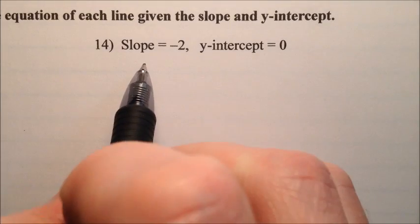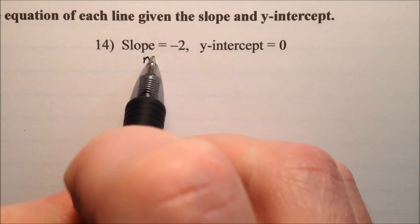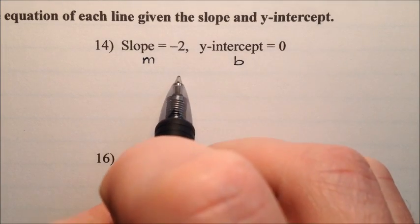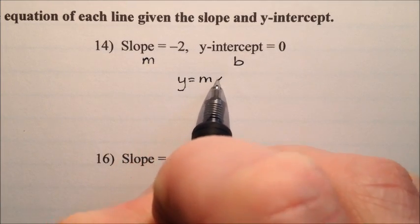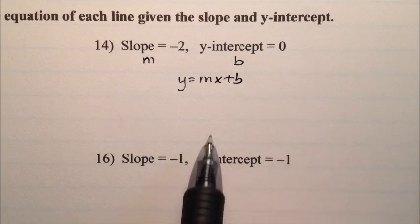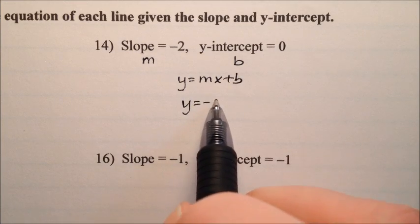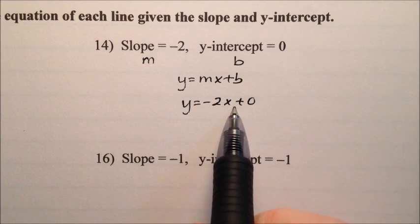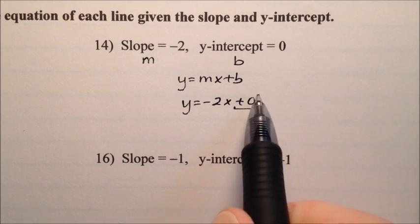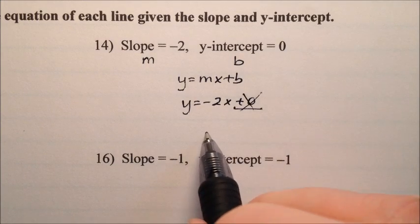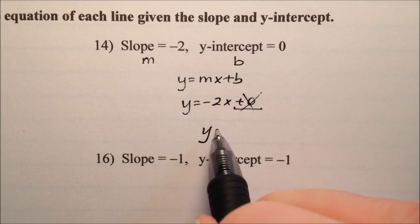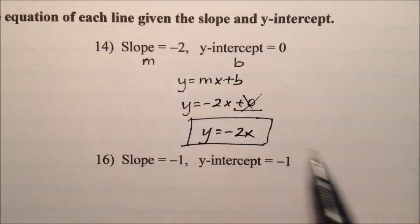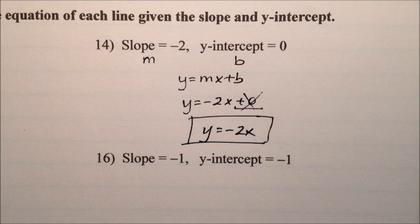On number 14, the slope is negative 2 and the y-intercept is 0. Putting this in y = mx + b form, m gets negative 2 and b gets 0. We don't care about the plus 0, so we write y = -2x, and that will be the answer for number 14.